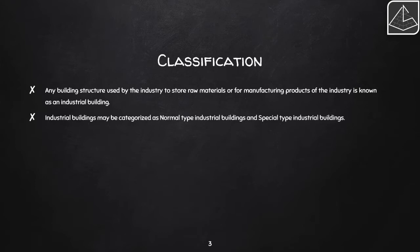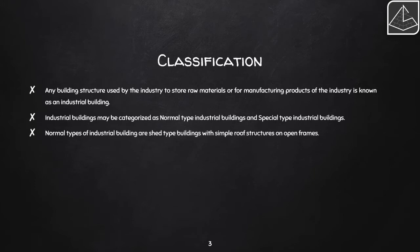Industrial buildings may be categorized as normal type and special type. Normal type industrial buildings are shed-type buildings with simple roof structures on open floor plans. These buildings are used for workshops or warehouses — warehouses for storing raw materials, and workshops where machinery is placed and used.